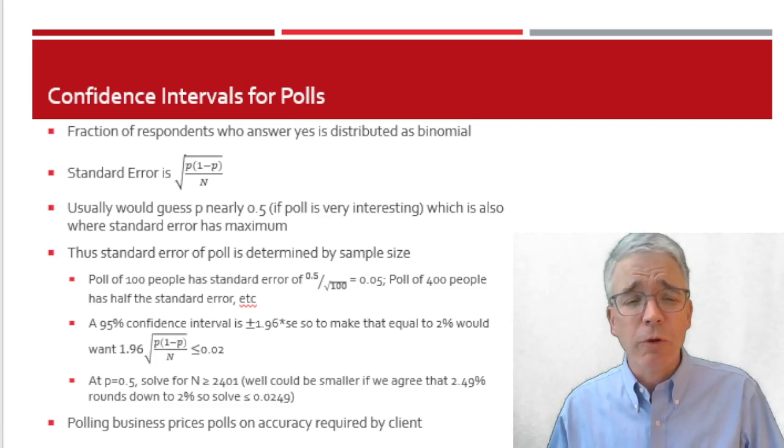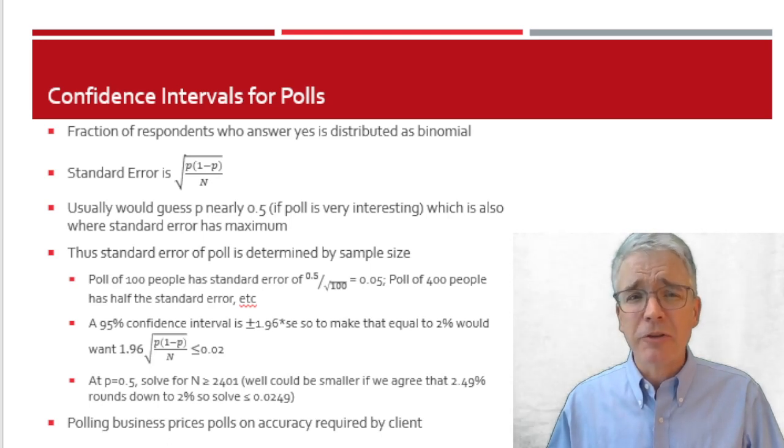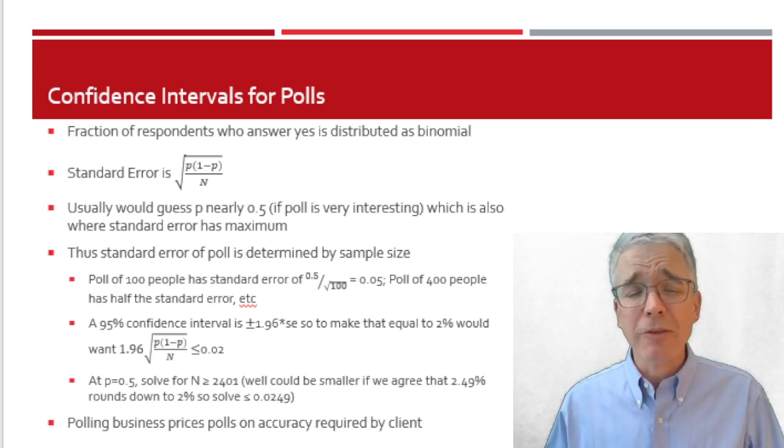Now, one of the places where ordinary people most commonly see confidence intervals is in polling. Support for some policy or some politician is given as a level with confidence interval, plus or minus 2 percentage points, maybe. Now we can figure out where they're getting that confidence interval from. It's actually easy, since the fraction of respondents who answer yes, call it p, is distributed binomial.